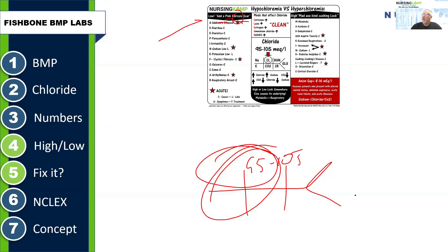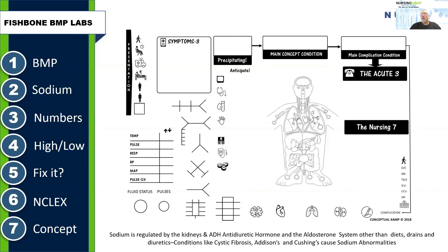To fix abnormal chloride, address the underlying cause. For example, giving steroids to a Cushing's patient may be contraindicated. Cortisone can increase chloride; Lasix can decrease it. Ammonium chloride and NSAIDs — including aspirin — can cause high chloride, relevant in aspirin toxicity. For the NCLEX, know what the chloride sweat test is, know Addison's is associated with low chloride, know the relationship of steroids and Cushing's with chloride levels. Mainly, chloride is a lab for the anion gap.